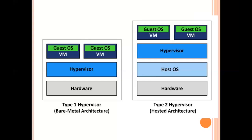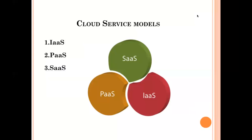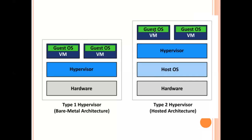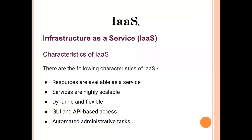The CPU is virtualized and the disk space is also virtualized and divided for the virtual machines. This is how the virtualization concept comes into IaaS. So we'll now see our cloud service models, starting with IaaS, that is Infrastructure as a Service.